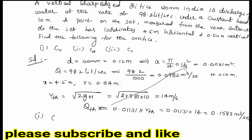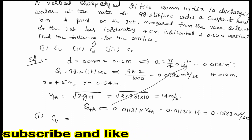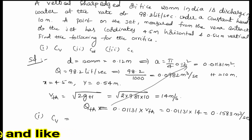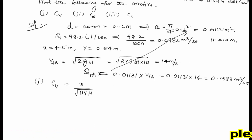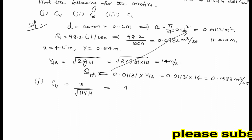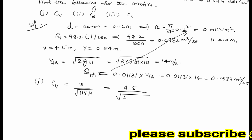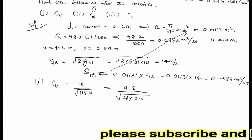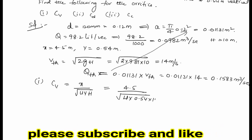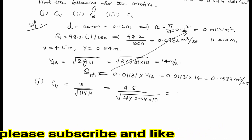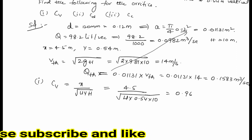Now we can calculate Cv. Cv equals actual velocity determined experimentally. Using the given xy coordinates, the formula is x divided by root of 4yH. Substituting the values: 4.5 divided by root of 4 multiplied by 0.54 multiplied by 10. Solving this gives us Cv equal to 0.968.